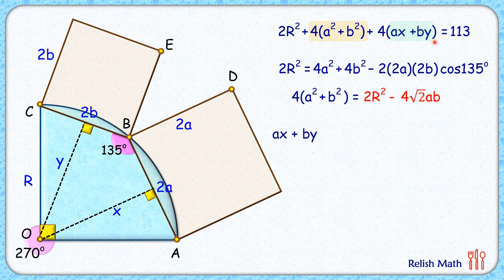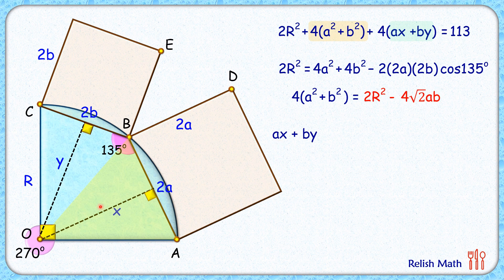Now let's find ax + by. In the yellow triangle, base = 2a and height = x, so its area = ½·(2a)·x = ax. Similarly, by represents the area of the pink triangle. So ax + by represents the total area of quadrilateral OABC.